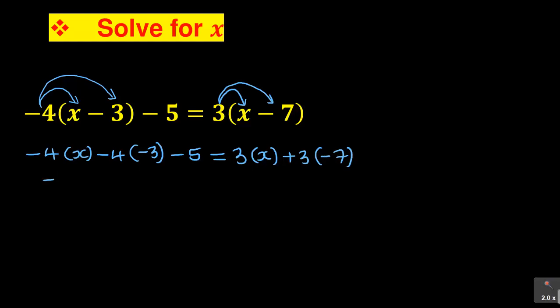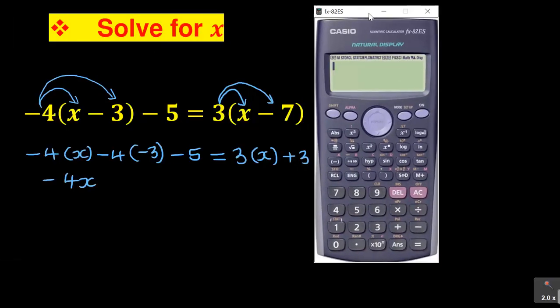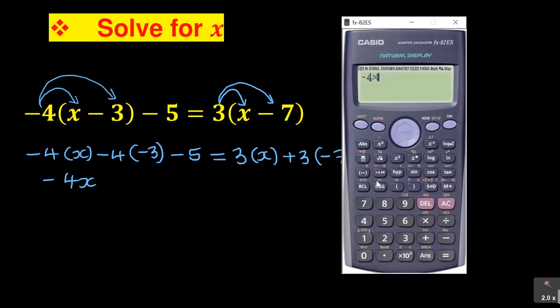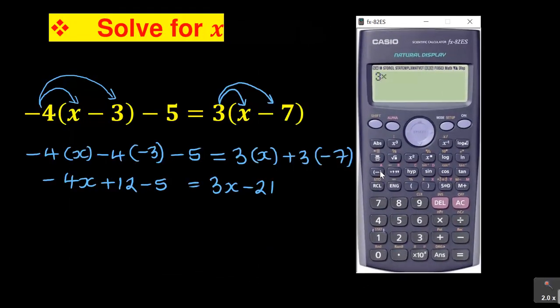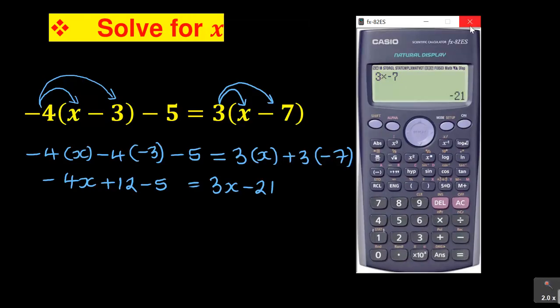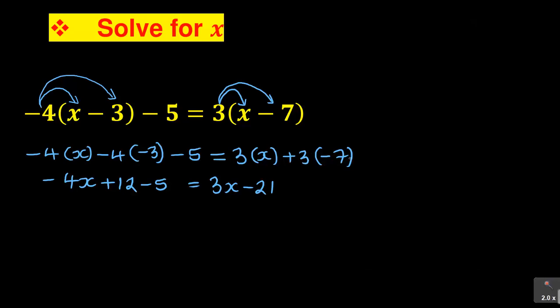When you simplify: minus 4 times X is minus 4X. Then minus 4 times minus 3 is positive 12. Always test that with the calculator — minus 4 times minus 3 is 12. Always test such with the calculator, especially when dealing with a negative sign. Then you have minus 5. On the right: 3 times X is 3X, and 3 times minus 7 is negative 21. You lose nothing by testing your answer. Sometimes a student writes 3 times negative 7 as positive 21, and then your answer is wrong just because of the sign. Always test your answers with the calculator.